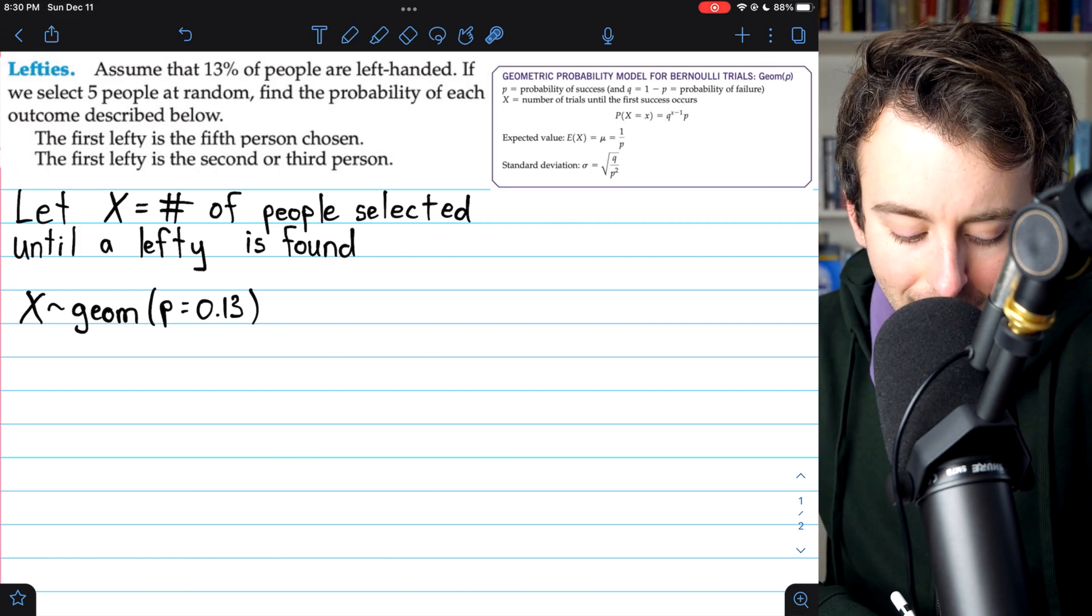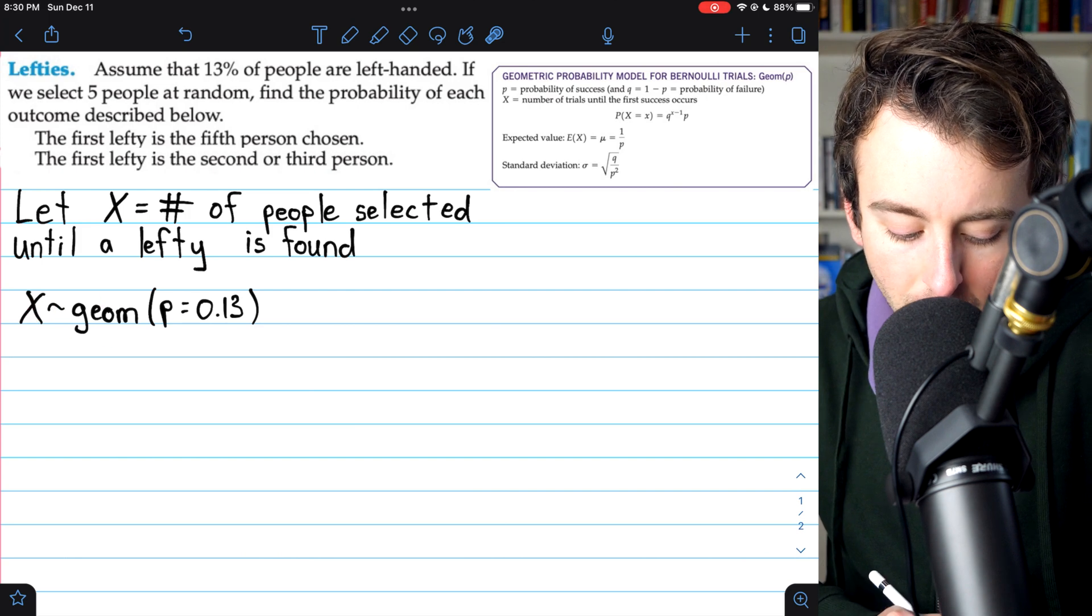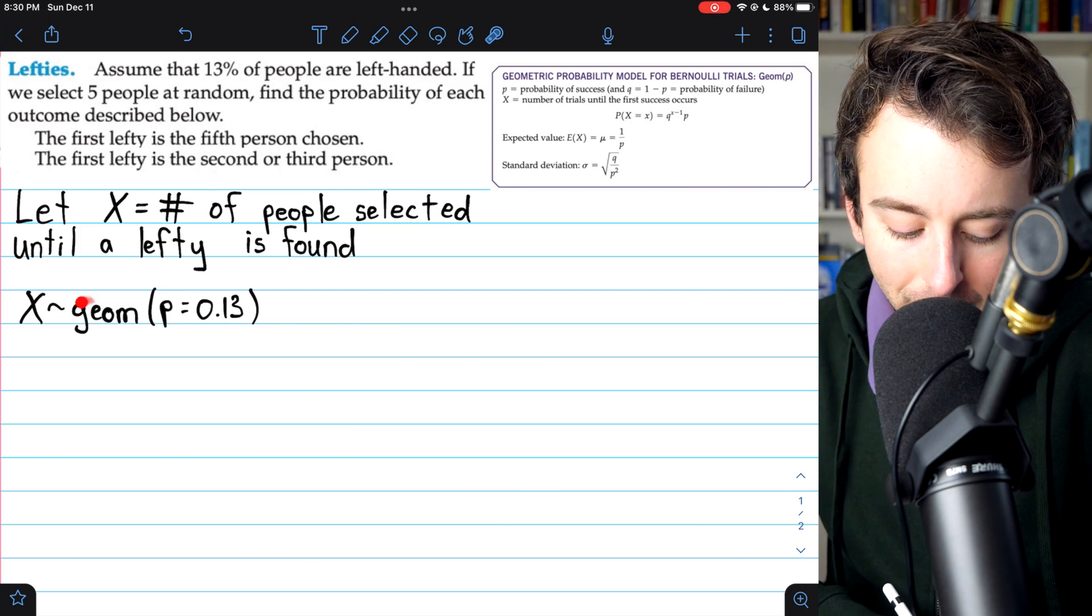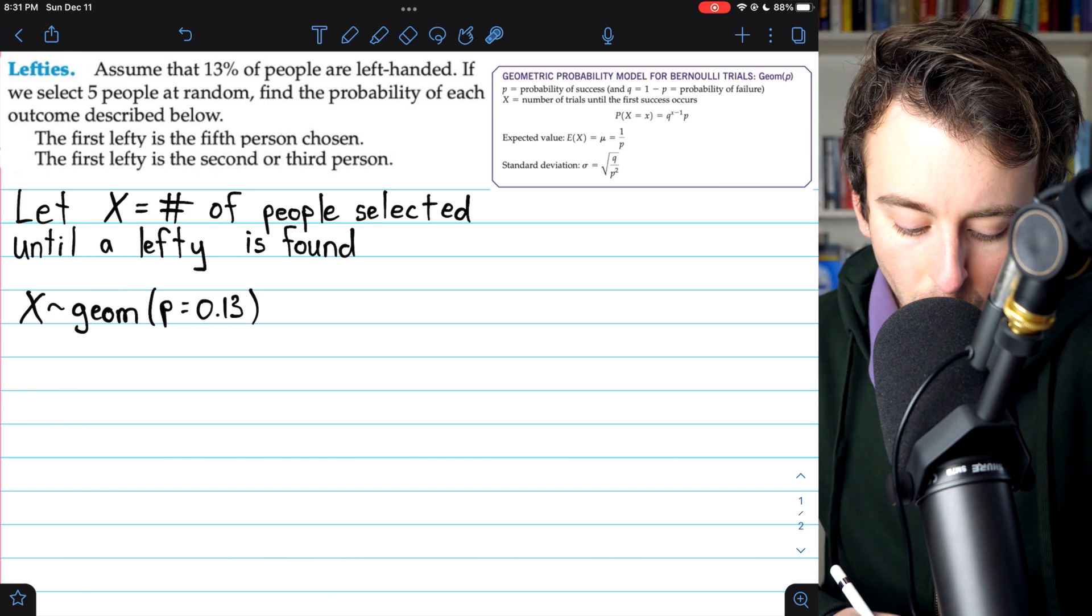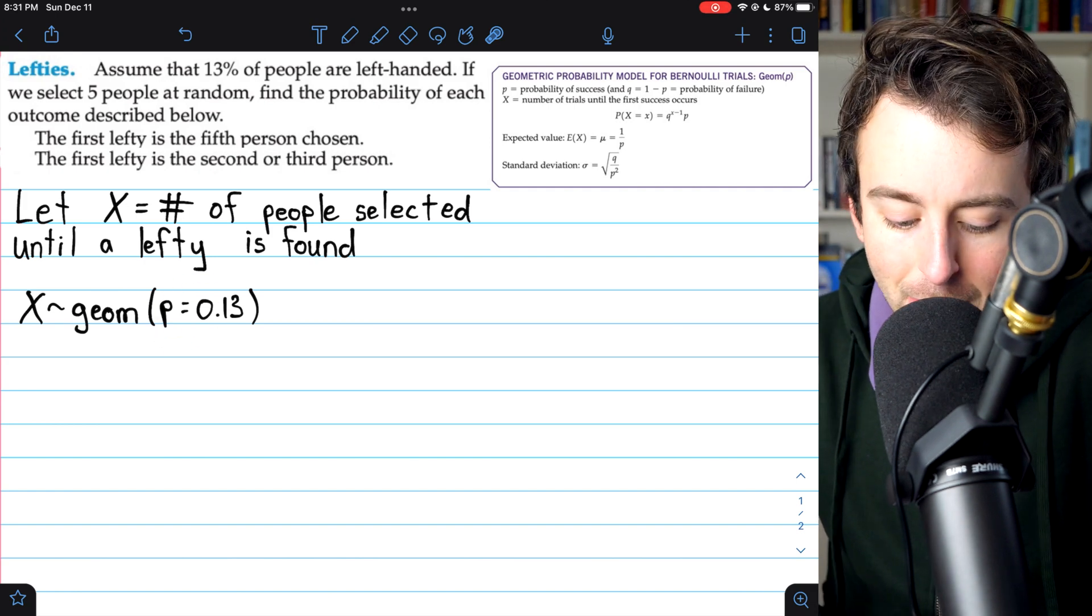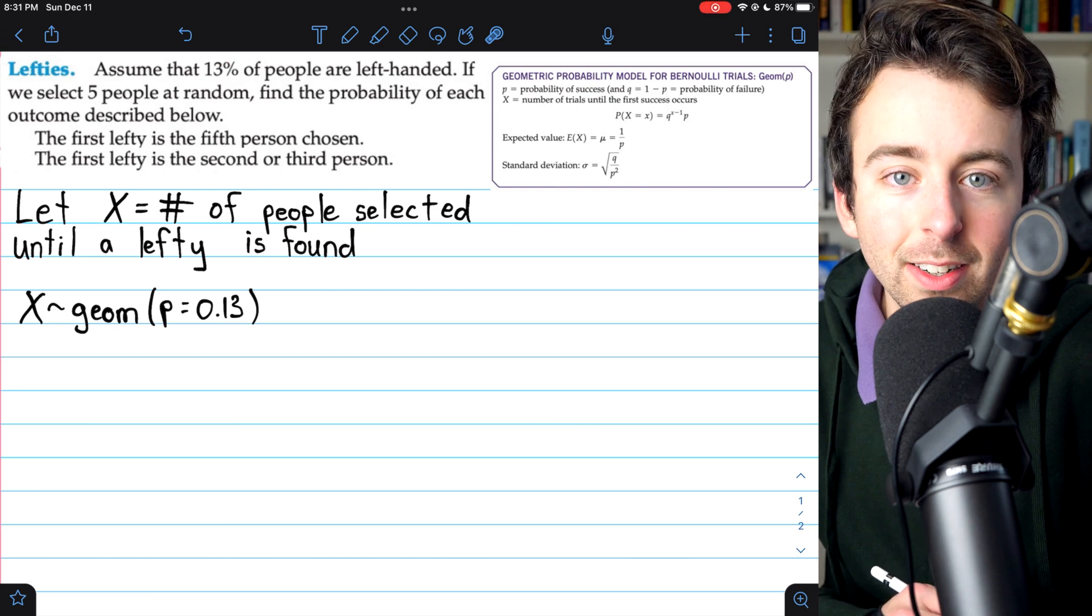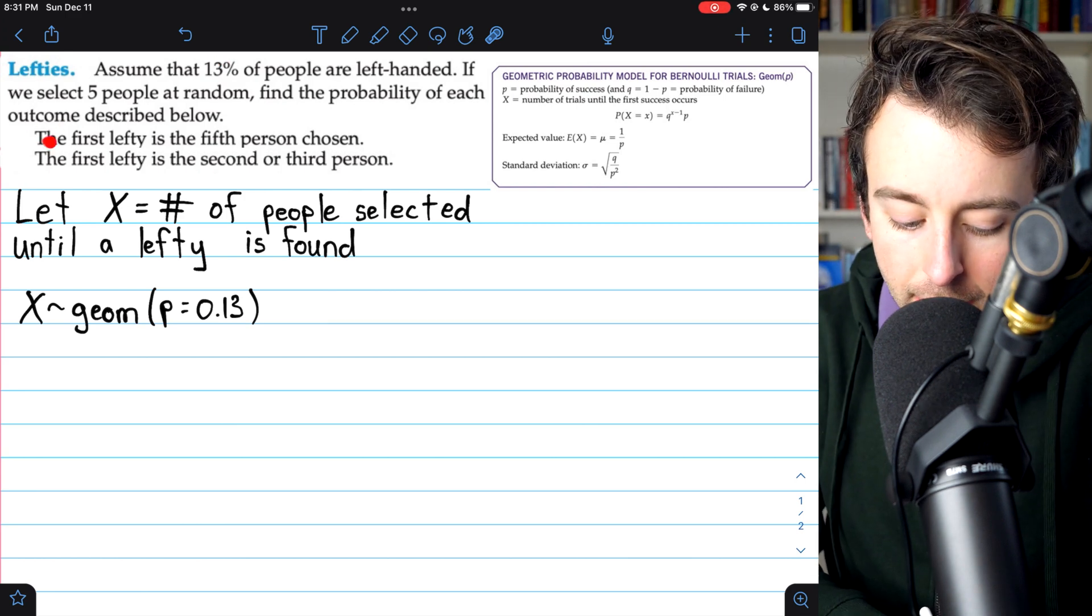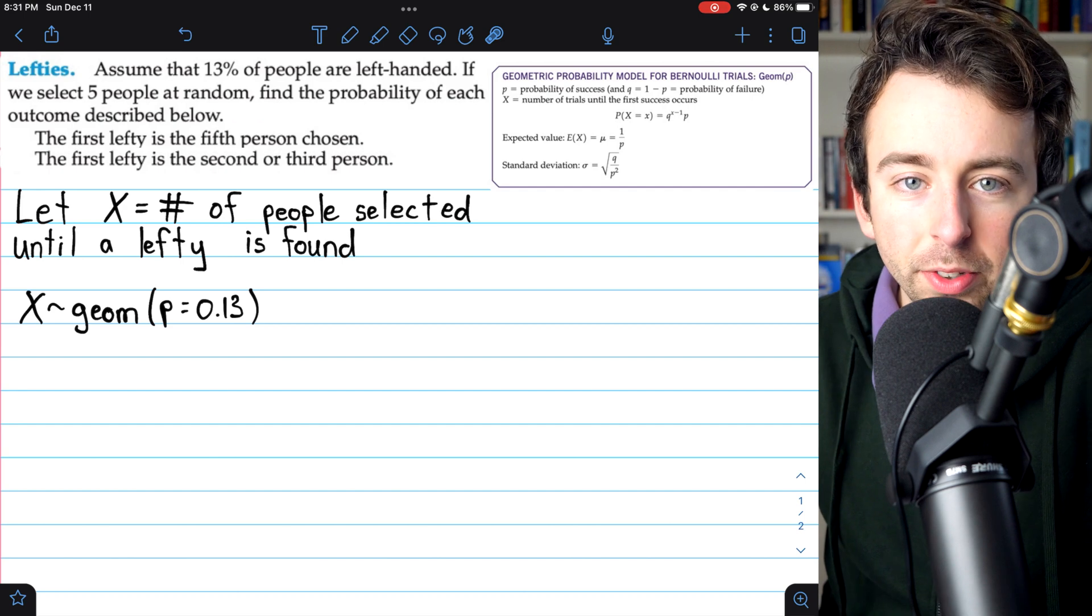So based on this situation, we could say that X is geometric. X is a random variable that is geometrically distributed with its one parameter P, its probability of success, being 13%.